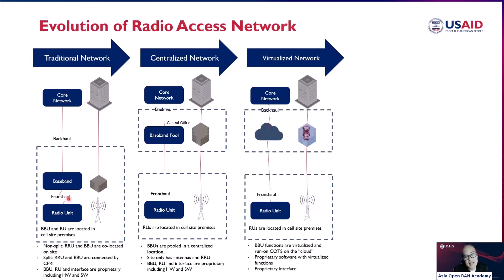To illustrate the difference: in the traditional network, if you want to activate additional capacity or an additional LTE carrier, the site engineer needs to go to the cell site premises, insert a board — for example, an additional LTE board — to activate that carrier. In the centralized network, if you need to upgrade a site, engineers don't need to go to the cell site premises; they go to the central office and switch boards there to activate the LTE.